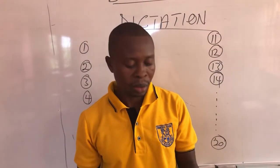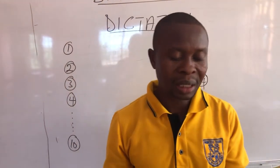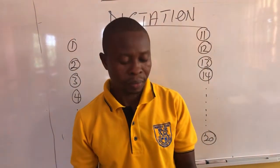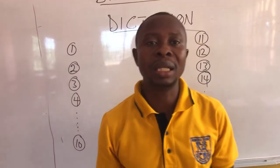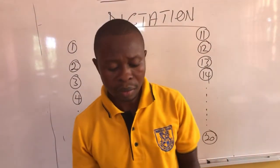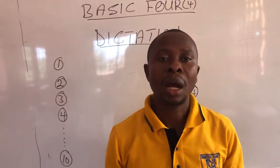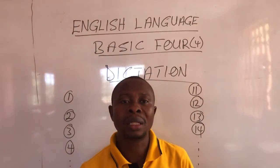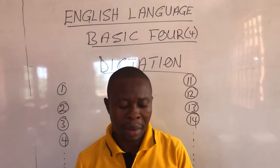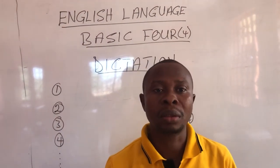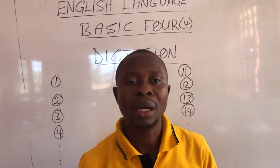Number 11, advance. Number 12, ancestor. Number 13, captive. Number 14, succeed. Number 15, doctor. Number 16, awake. Number 17, straight. Number 18, generous. Number 19, dishonest. And number 20, listener.